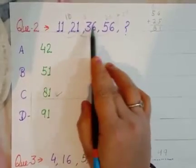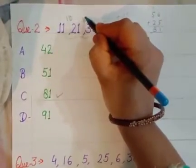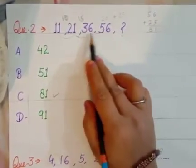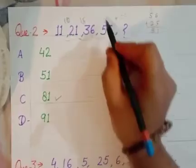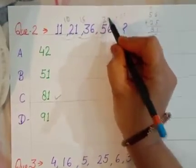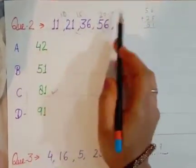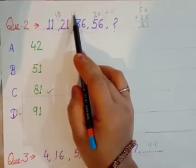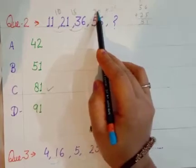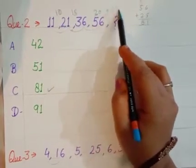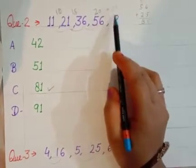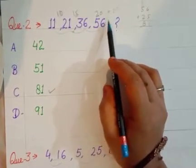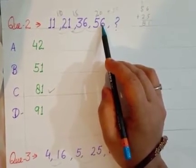Question number 2: 11, 21, 36, 56, next. Between 11 and 21, the difference is 10. Between 21 and 36, it's 15. Between 36 and 56, it's 20. So you have seen this series: we added 10, then 15, then 20. Next we will add 25.